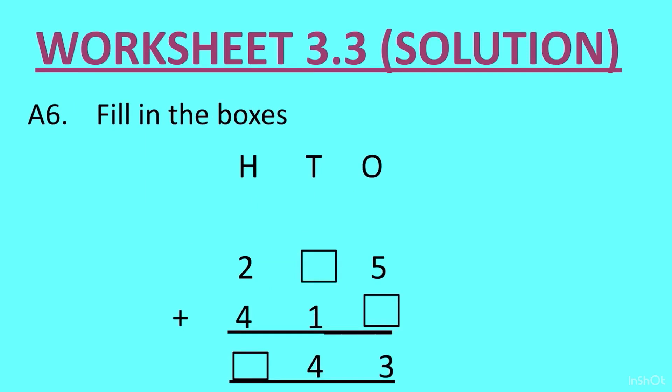Question 6: fill in the boxes — addition question. In the ones column: 5 plus blank equals 3. Since 3 is small, assume it is 13. 13 minus 5 is 8, so write 8 here. 5 plus 8 is 13, and carry 1 on top. Then: 1 plus blank plus 1 equals 4, meaning 2 plus one more number equals 4, so that number is 2. Write 2 in this blank. Then 2 plus 4 is 6, so write 6 in the last box.